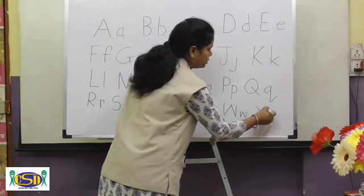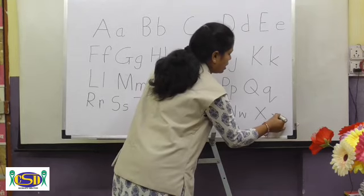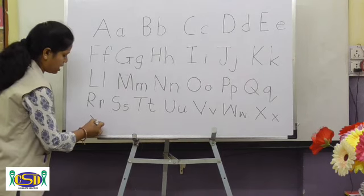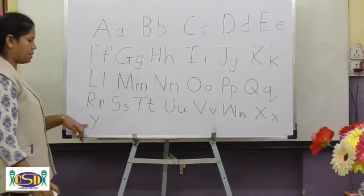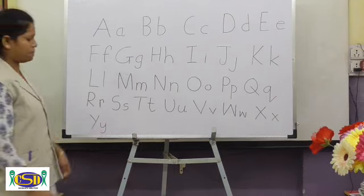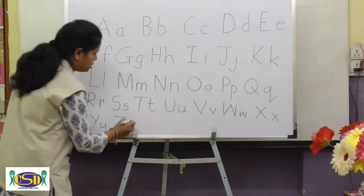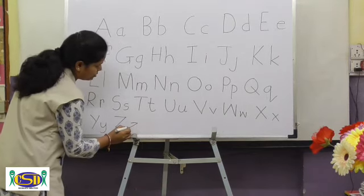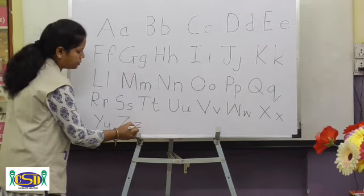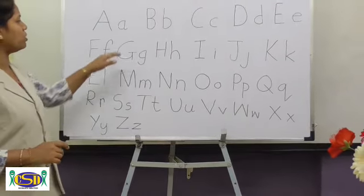Left slant line, right slant line — capital X. Left slant line, right slant line — small x. Left slant line, right slant line — capital Y. Upward curve, left hook — small y. Sleeping line, right slant line, sleeping line — capital Z. Sleeping line, left slant line, sleeping line — small z.